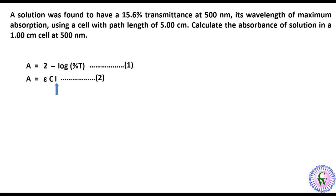Given that the percentage transmittance is 15.6, putting this value in equation number 1 will give A is equal to 2 minus log 15.6, or A is equal to 2 minus 1.193, or A is equal to 0.807.